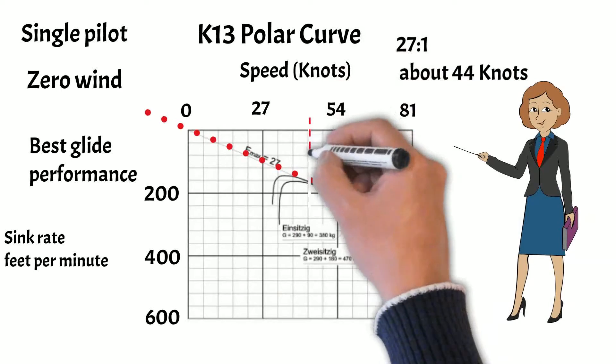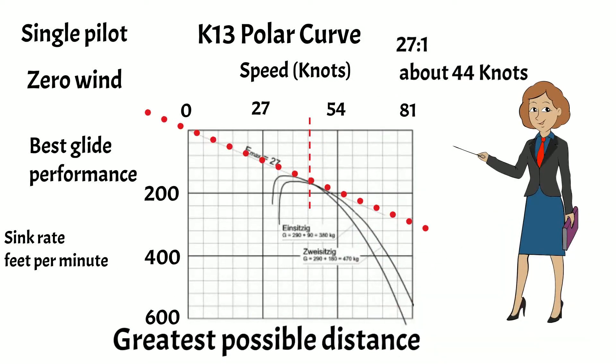The best glide performance is here. About 27 to 1 at 44 knots. This gives us the greatest possible distance.